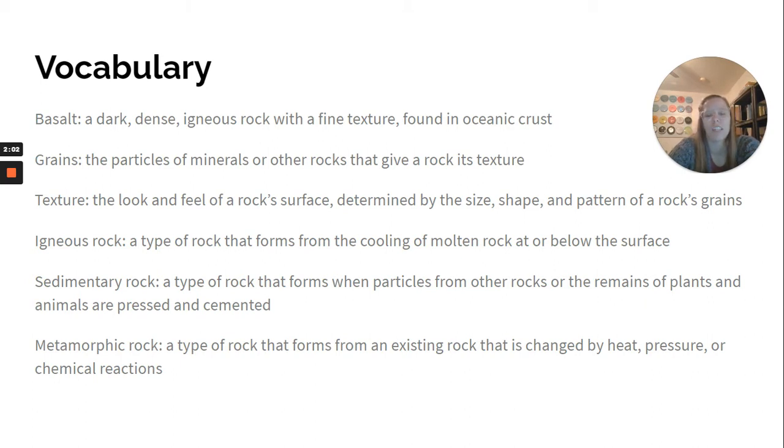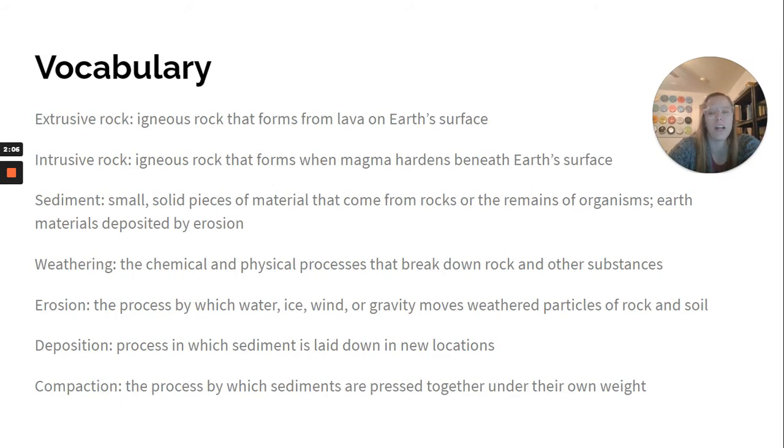Metamorphic rock: a type of rock that forms from an existing rock that is changed by heat, pressure, or chemical reactions. Extrusive rock: igneous rock that forms from lava on Earth's surface. Intrusive rock: igneous rock that forms when magma hardens beneath Earth's surface.